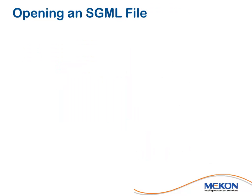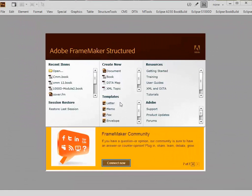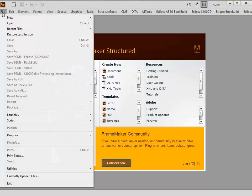What we're going to do now is have a look at the opening of a typical SGML file, and we're going to be choosing a CMM to demonstrate how it works. We're going to open up an existing template — an empty ATA SGML file — and create the CMM from that.